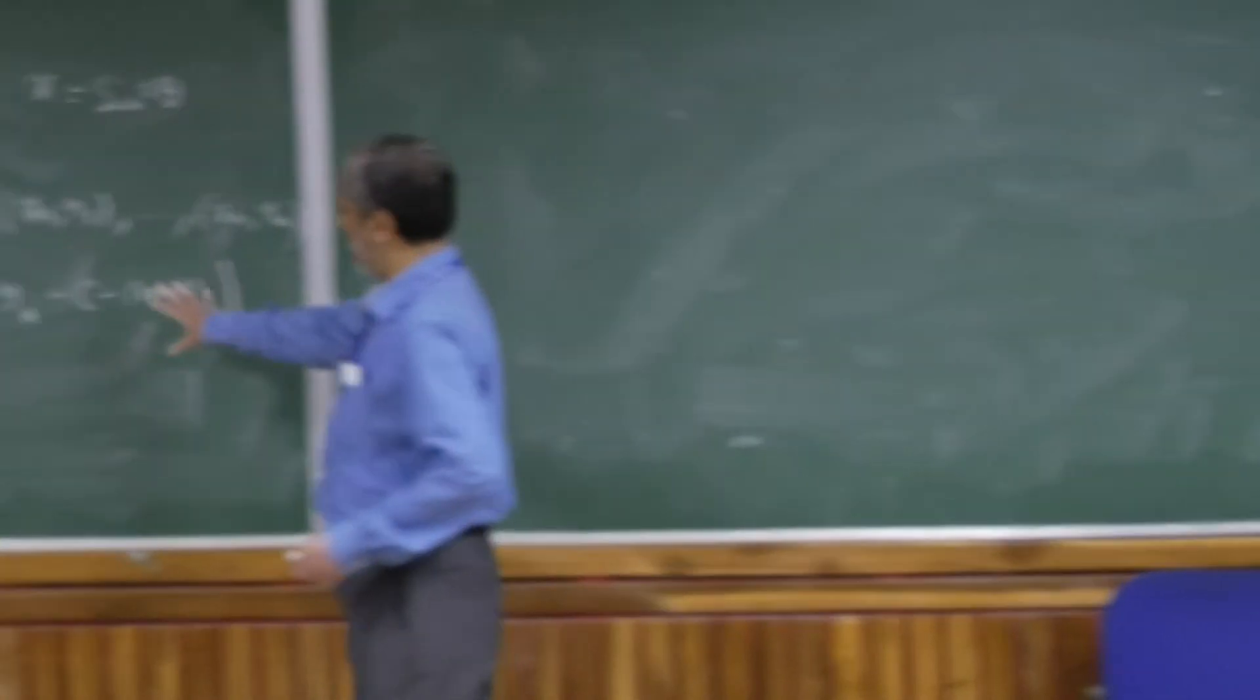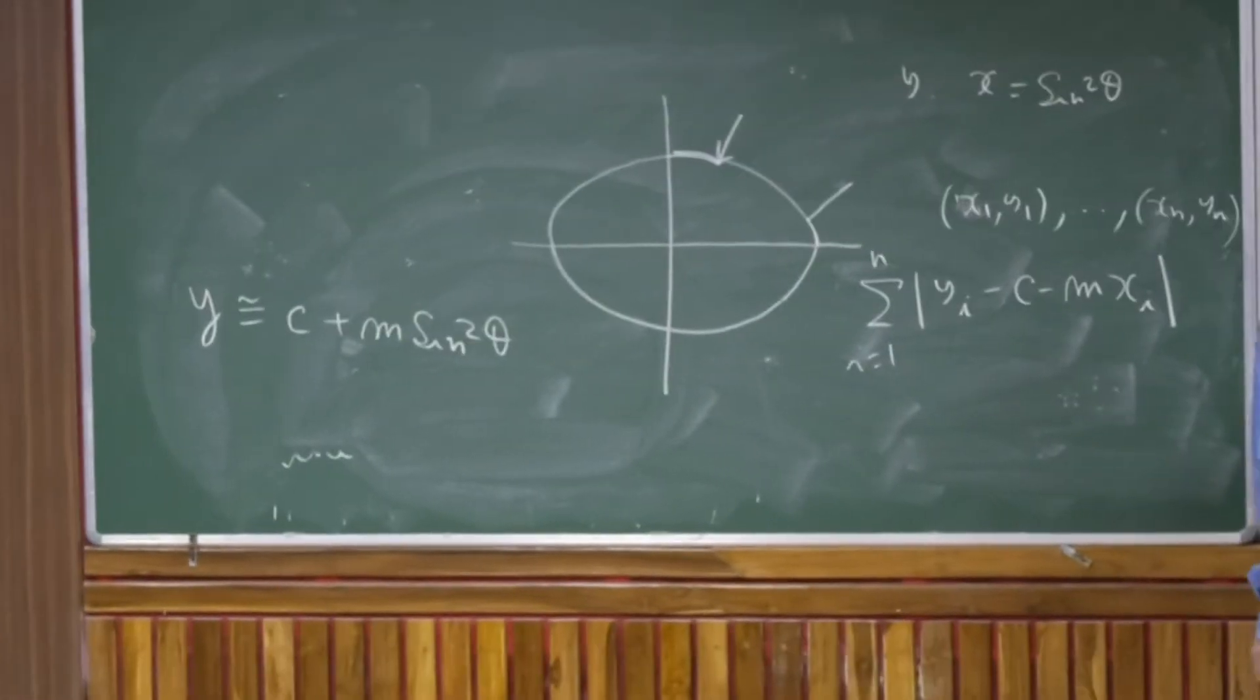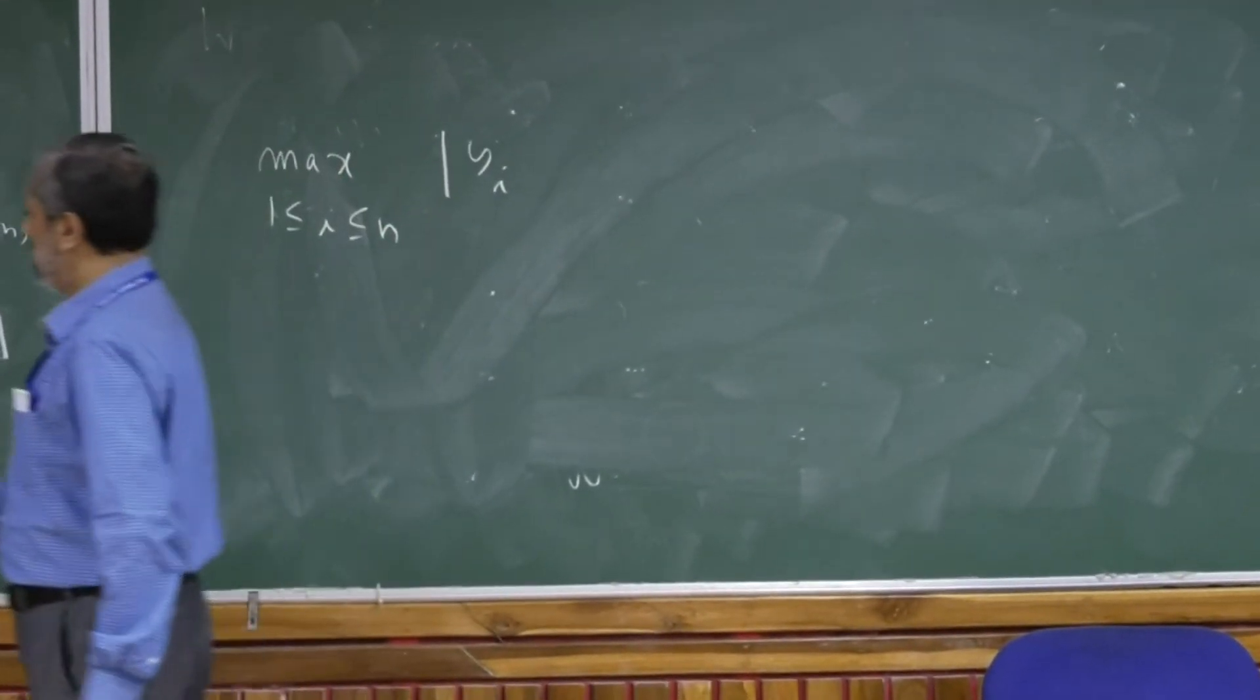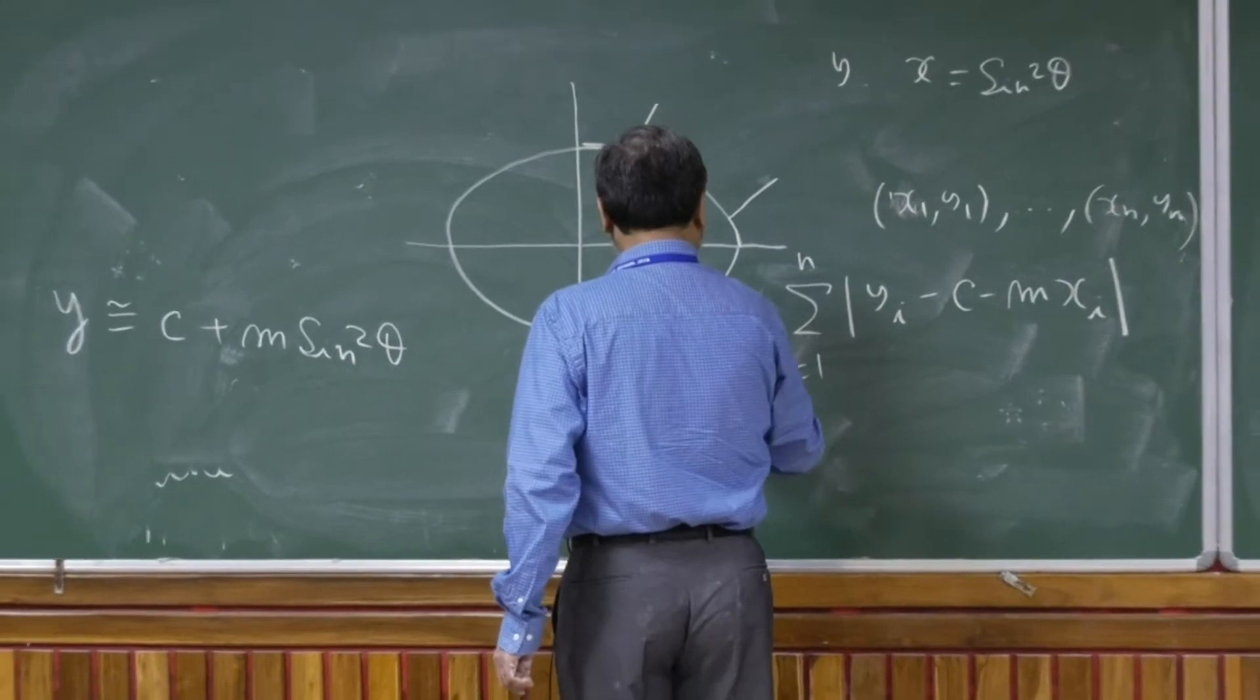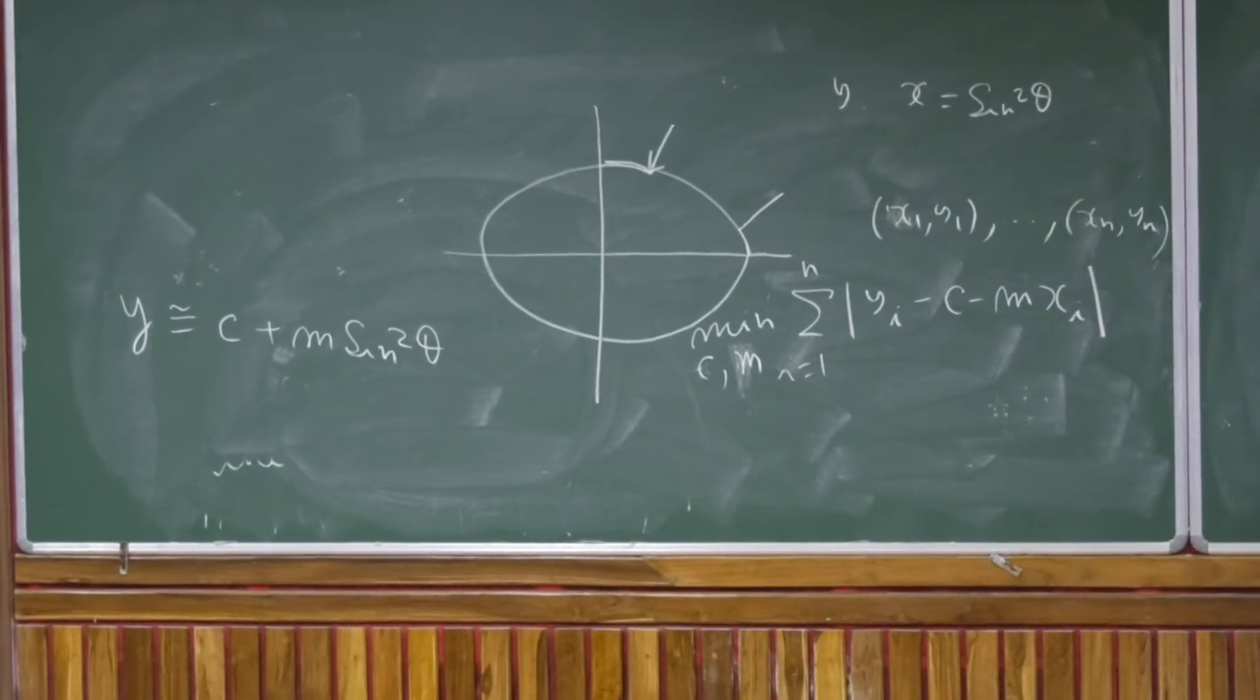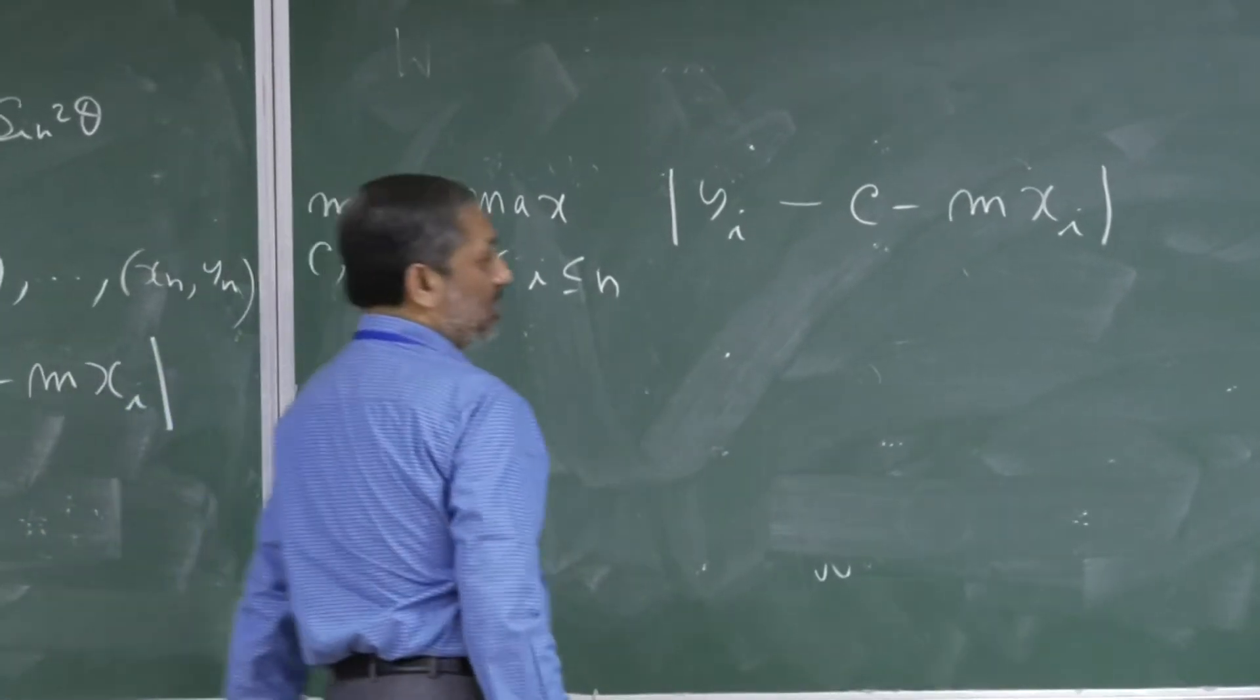Laplace also tried and gave a partial solution to this problem, but he couldn't solve this problem completely. In fact, Laplace tried this problem, and I'll write down the second problem. So Laplace tried to solve this problem also: minimize maximum absolute value of yi minus c minus mxi over C and M. And Laplace was trying to solve this problem.